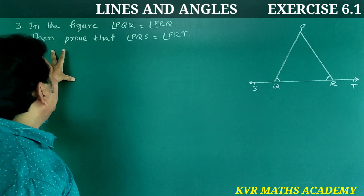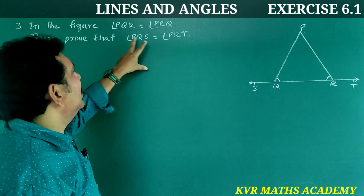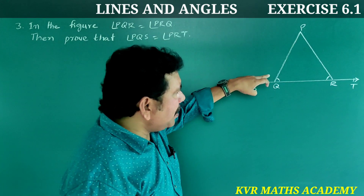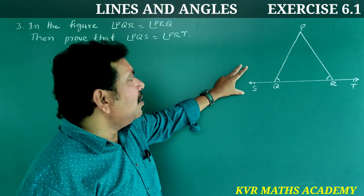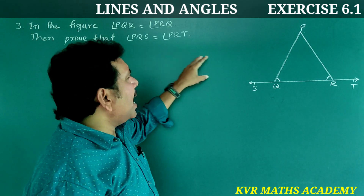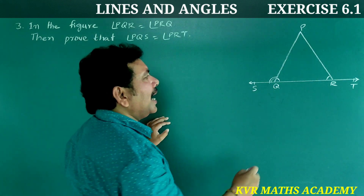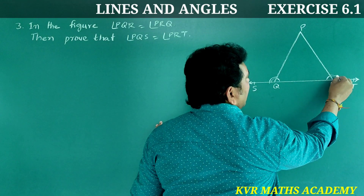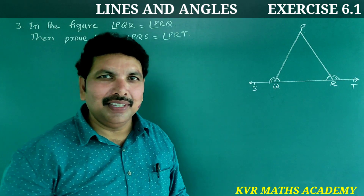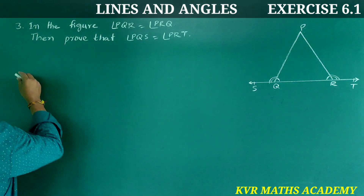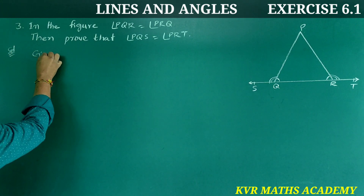Third question: In the figure, angle PQR is equal to angle PRQ. Then prove that angle PQS is equal to angle PRT. In the given figure, angle PQR equals angle PRQ is given, and we have to prove that angle PQS equals angle PRT.